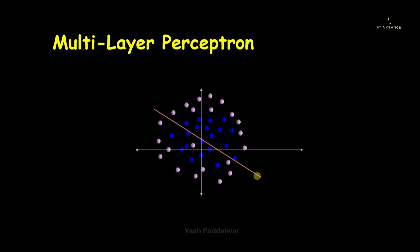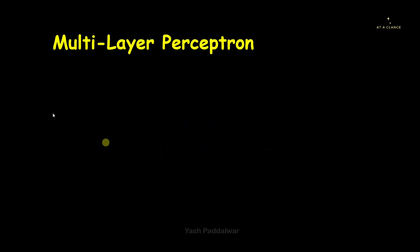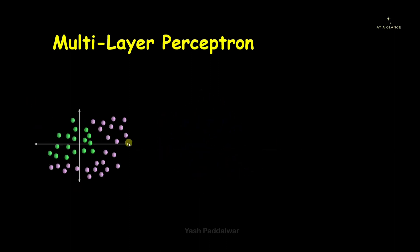This data is non-linearly separable. Even if we try many different classifiers using a single layer perceptron, it won't be able to separate these two classes completely. Here we have again two classes — green circles and pink circles — and again these two are non-linearly separable.